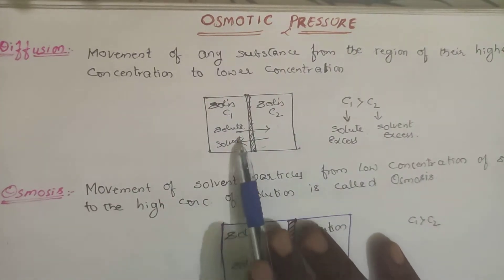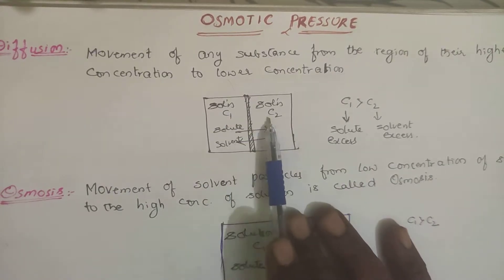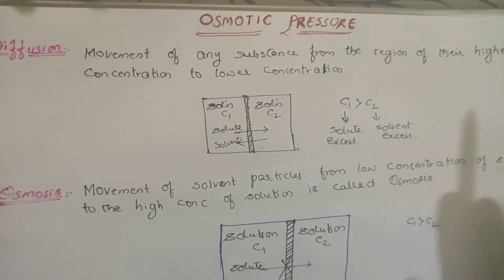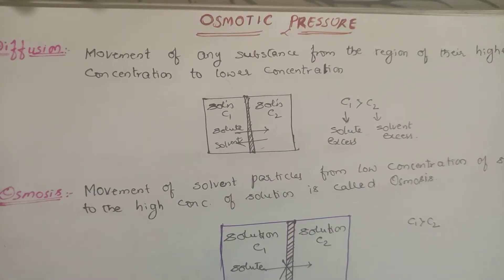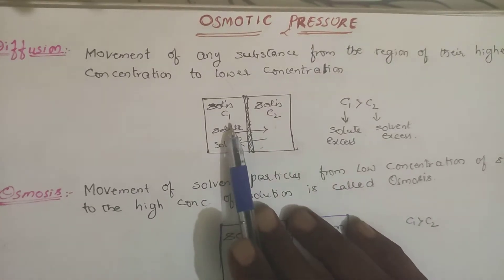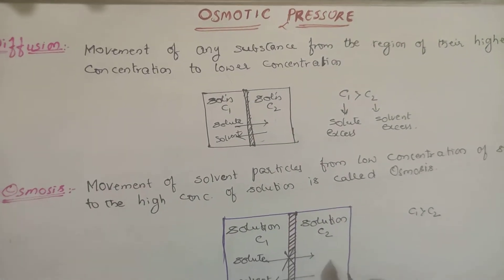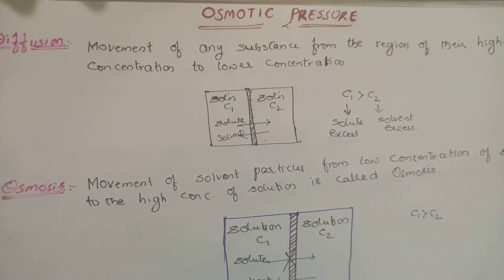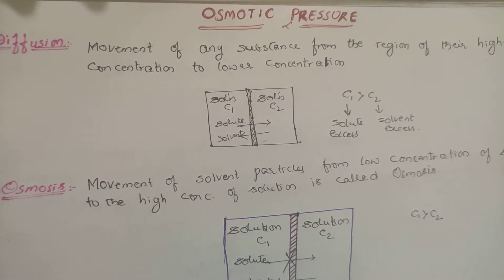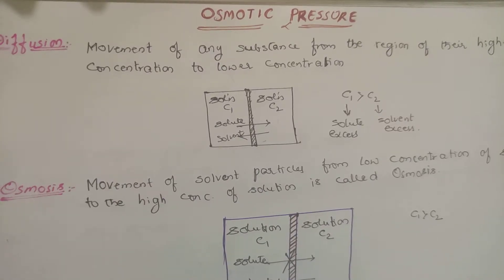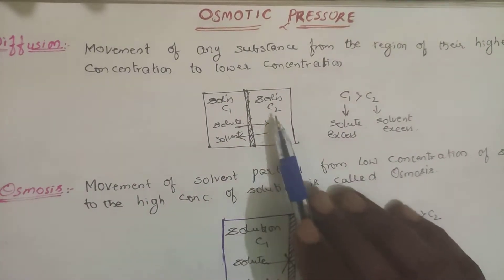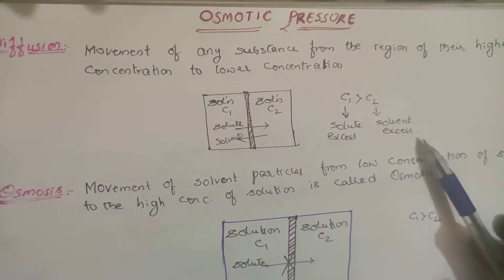Suppose we take solutions. Consider a container divided into two compartments: one has solution with concentration C1 and another with concentration C2. Concentration means the number of moles present in a given volume. In C1 the solute is in excess — more solute particles means higher concentration. In C2, the number of solute particles is low, meaning the solvent particles are more in number.